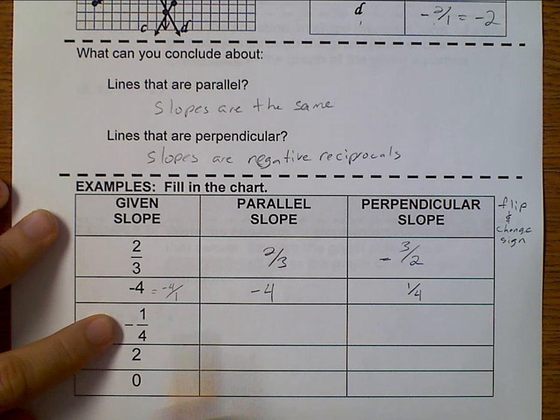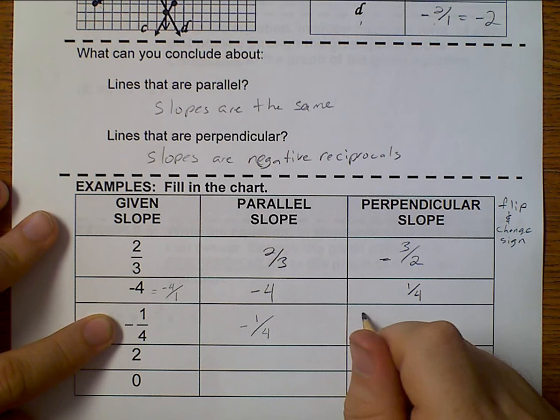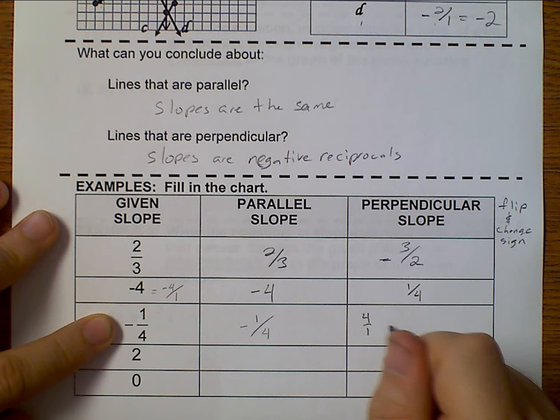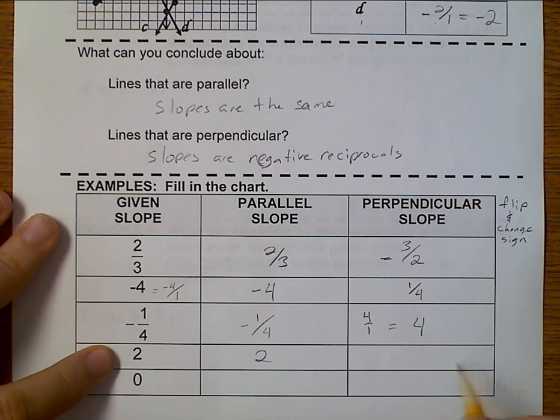We've got negative 1 fourth. When it's parallel, it's also negative 1 fourth. We flip it and make it positive 4 over 1 just equals 4. Parallel is 2. That's the same as 2 over 1. So perpendicular would be negative 1 half.